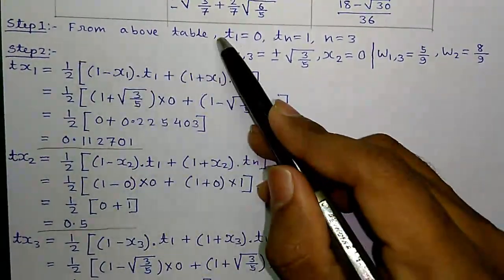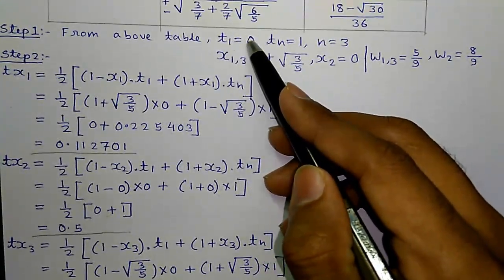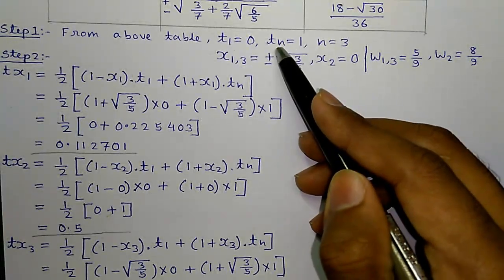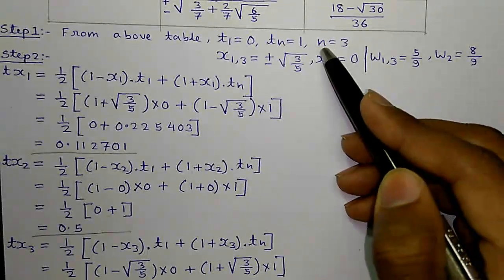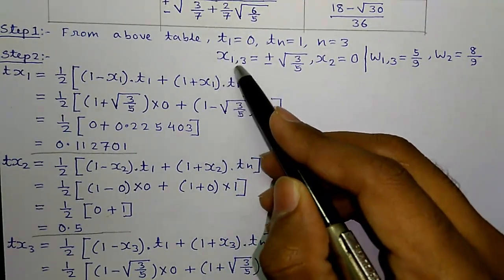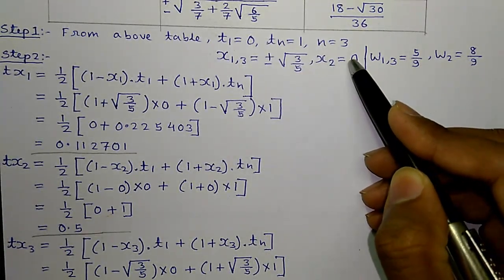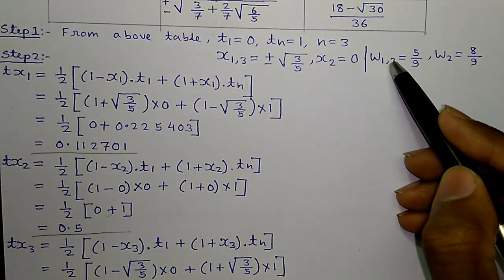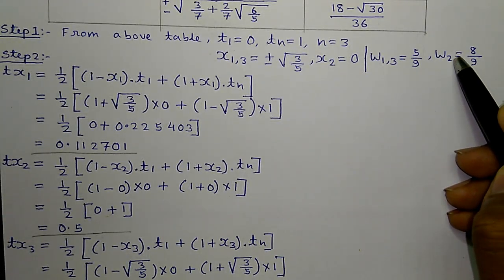Step 1, from the above table, t1 equals to 0 which is the lower limit of the integration and tn equals to 1 which is the upper limit of the integration and n equals to 3 since it is a 3-point formula. Now, x of 1,3 equals to plus or minus root over 3 by 5 and x2 equals to 0. Similarly, w of 1,3 equals to 5 by 9 and w2 equals to 8 by 9.